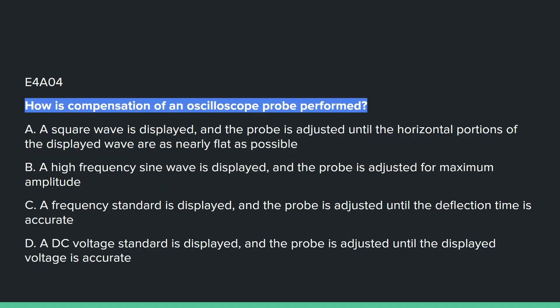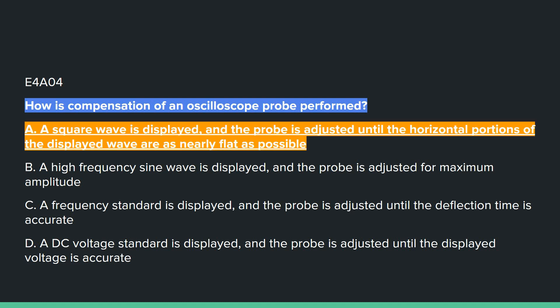E4A04: How is compensation of an oscilloscope probe performed? Answer A: a square wave is displayed and the probe is adjusted until the horizontal portions of the displayed wave are nearly flat as possible.